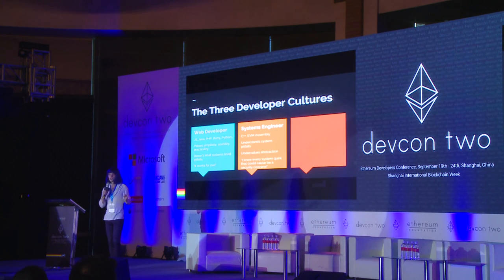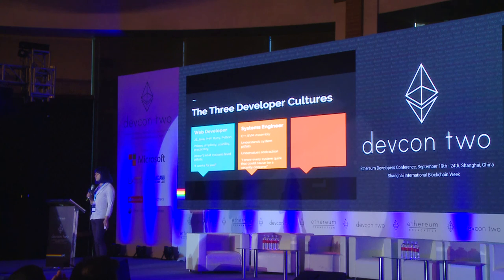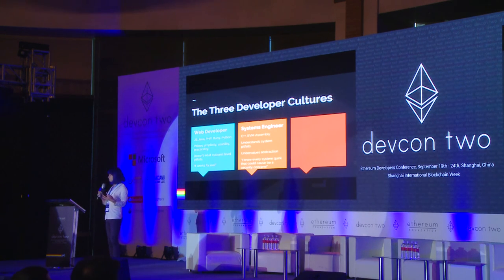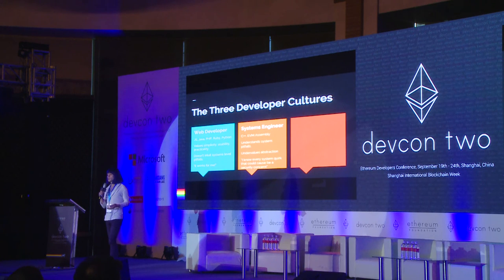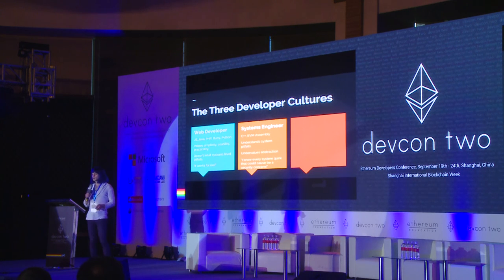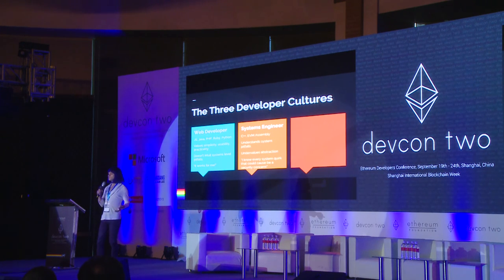The systems engineer is a great category — a lot of the folks on the foundation doing lower-level EVM work, EVMC, they're systems engineers. They know the EVM, they know the hardware. When you hear about 64-bit versus 256-bit and the implications, systems engineers are experts at understanding those details. Their potential blind spot is that they can undervalue abstraction. A C++ programmer might say everyone should know all these details about memory allocation, but the truth is higher levels of abstraction allow more people to develop applications effectively. It's more about finding the right abstractions than getting rid of abstraction completely.